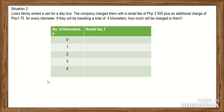Situation 2: Lina's family rented a van for a day tour. The company charged them a rental fee of 3,000 plus an additional charge of 1.75 pesos for every kilometer. If they will be traveling a total of 4 kilometers, how much will be charged? Use this table of values to find the answer. For 0 kilometers added, the total is 3,500. For 1 kilometer, the total is 3,501.75. For 2 kilometers, we have 3,503.75.